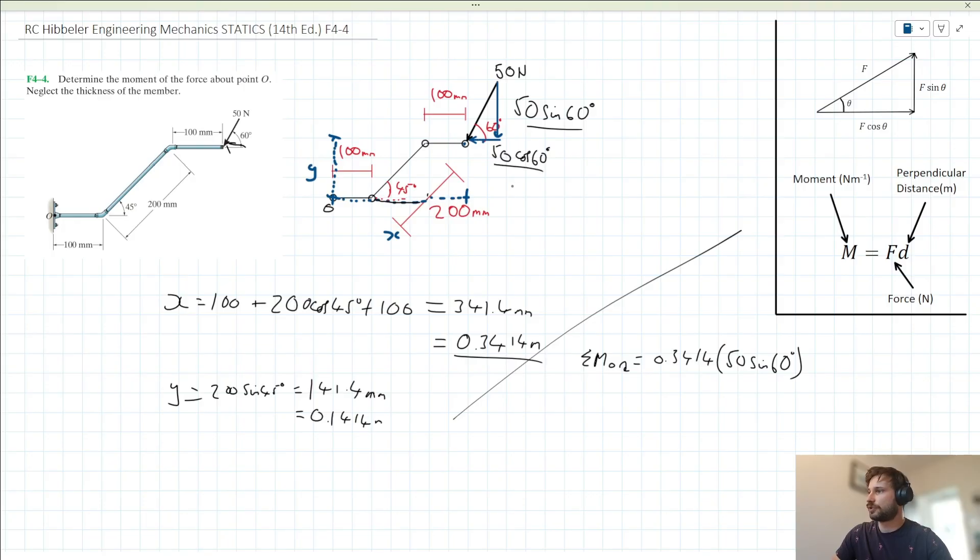For the horizontal component, that enacts an anticlockwise moment about point O, so we take that as negative: minus 0.1414 times 50 cos 60. When we put this sum into our calculator, it gives us 11.25 newton meters. That's our solution.